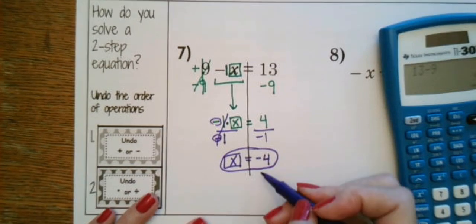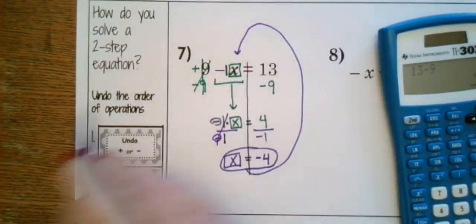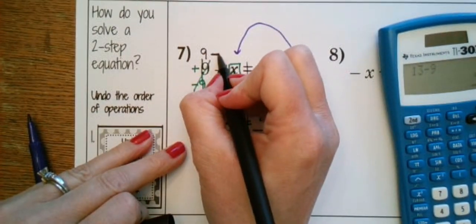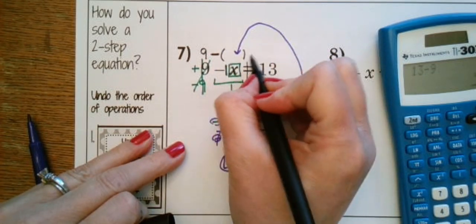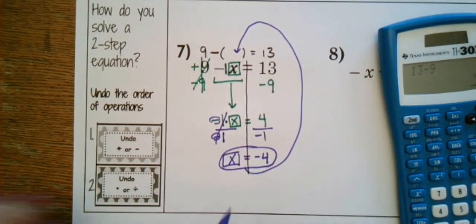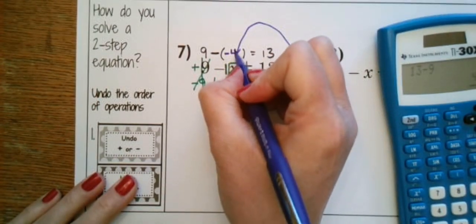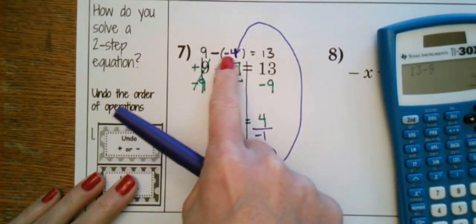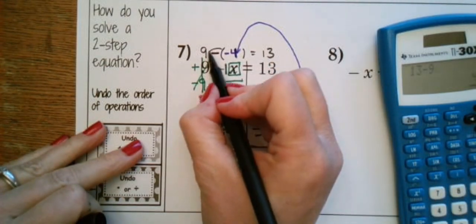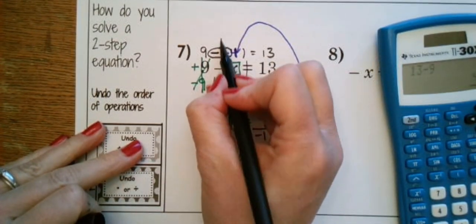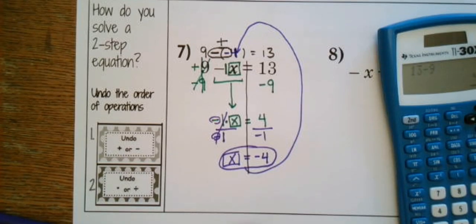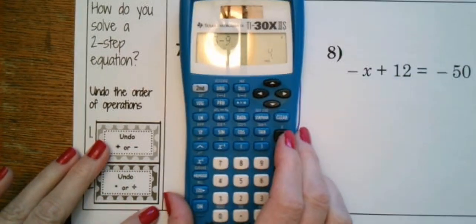Let's go back and put that back into the equation: nine minus X equals 13. If we got negative four for X, is it true that nine minus negative four equals 13? Absolutely — take away a negative means to add, and nine plus four is 13. See how we can go back, plug it right back in, and check.